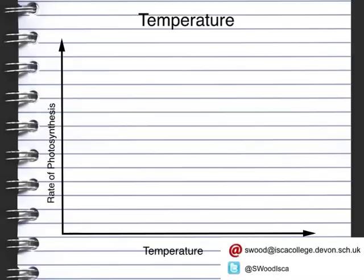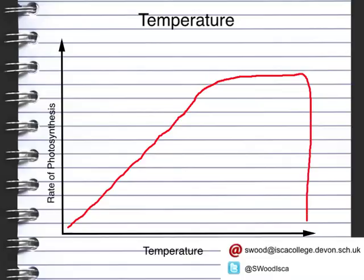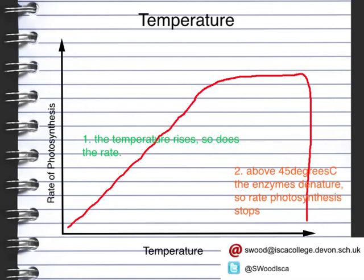As you increase the temperature, the rate of photosynthesis increases. We follow a pattern where as you increase the temperature, the rate increases. At a certain point, the rate starts to level off and then it decreases until it stops. This is because it's a limiting reactant. The rate of photosynthesis stops because above 45 degrees, the enzymes that help control photosynthesis are denatured, so they stop the photosynthesis process happening.